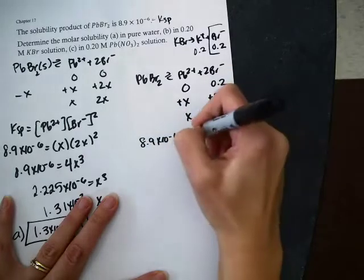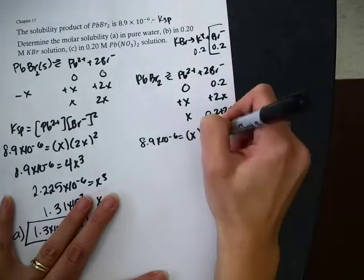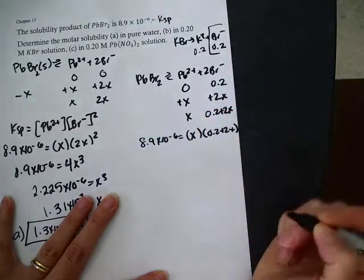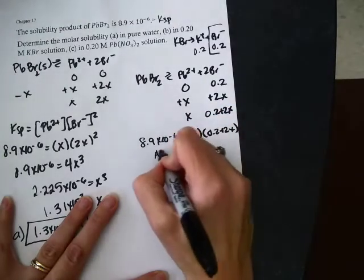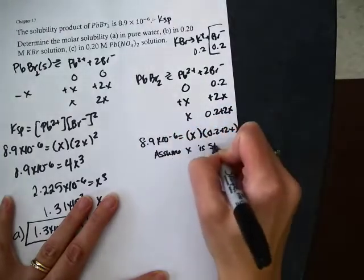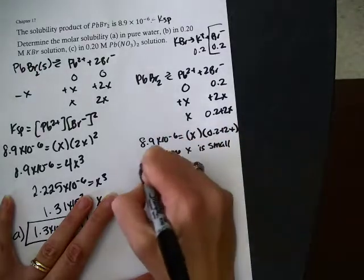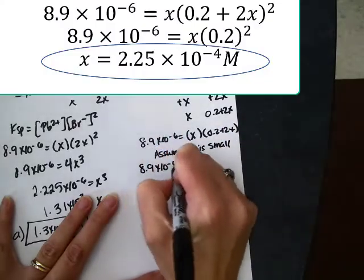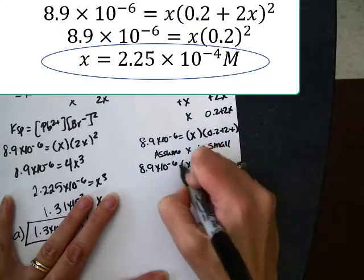Same Ksp. That is still X. But this time I have 0.2 plus 2X. I forgot to write squared, but it's squared. I will assume X is small, because I have X added on to something. That's the only way I can avoid the quadratic.